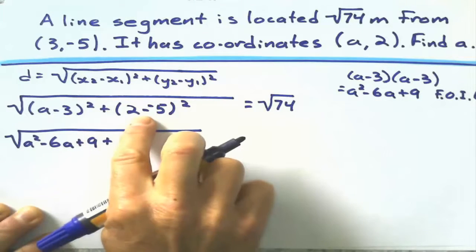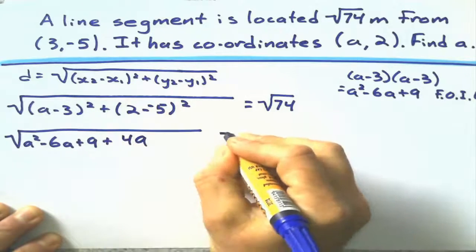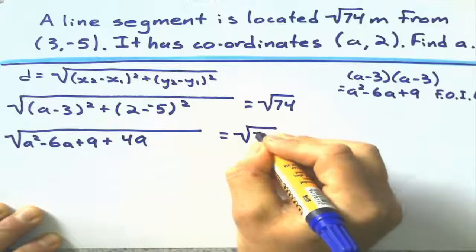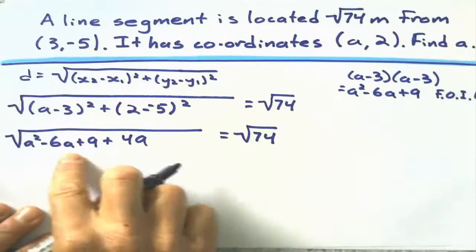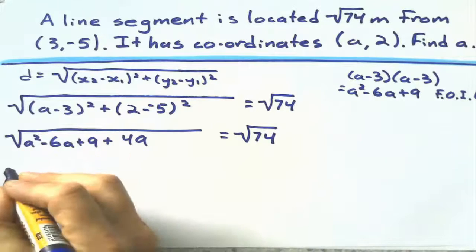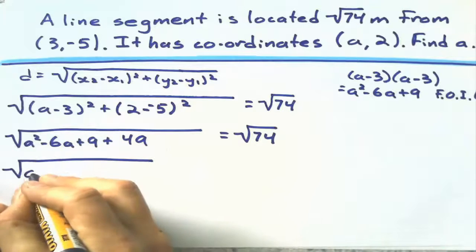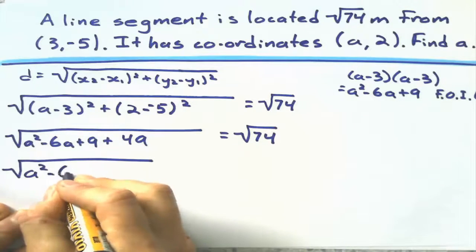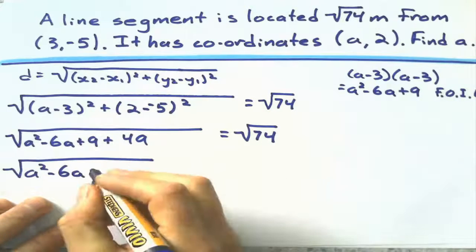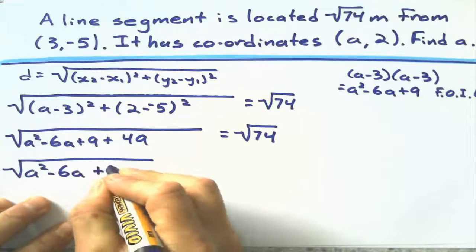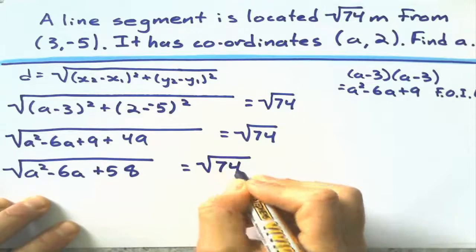So, I get a squared minus 6a plus 9. Plus, that gives me 7 squared. 7 squared is 49. Still equaling square root of 74. I can still clean this up a little bit more. And I get a squared minus 6a. 9 and 49 give me 58. Giving me square root of 74.